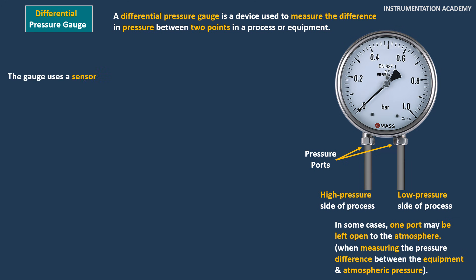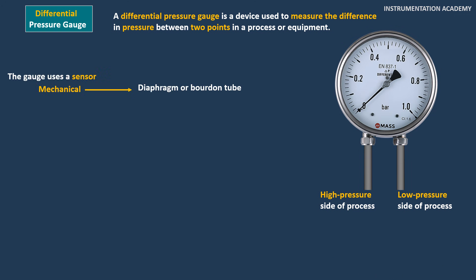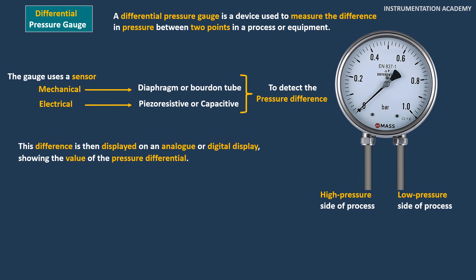The gauge uses a sensor, which can be mechanical like a diaphragm or Bourdon tube or electrical like piezo-resistive or capacitive to detect the pressure difference. This difference is then displayed on an analog or digital display, showing the value of the pressure differential.